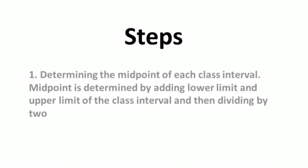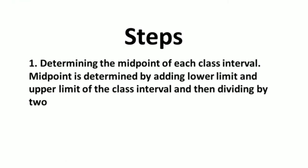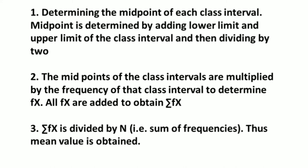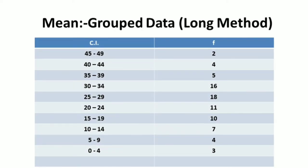Let's revise the steps. Step one: determine the midpoint of each class interval. Step two: multiply the midpoints by the frequency of each class interval to determine fx, and add all fx to obtain summation fx. Step three: divide summation fx by n, the sum of frequencies, to obtain the mean. I hope you have learned how to calculate the mean by the long method.